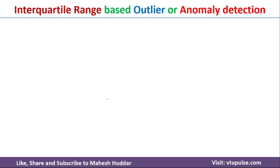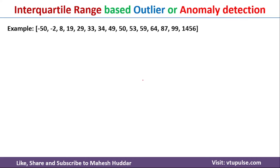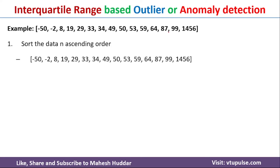To understand IQR based outlier detection and removal, I will consider this particular dataset. The dataset contains 15 values. In the IQR method, first we need to arrange the dataset in ascending order. The data here is already in ascending order, so there is no issue. If the data is not in ascending order, we need to sort it first and then proceed to the second step.